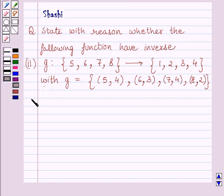So let us start the solution now. We know g is a function from set {5, 6, 7, 8} to set {1, 2, 3, 4}